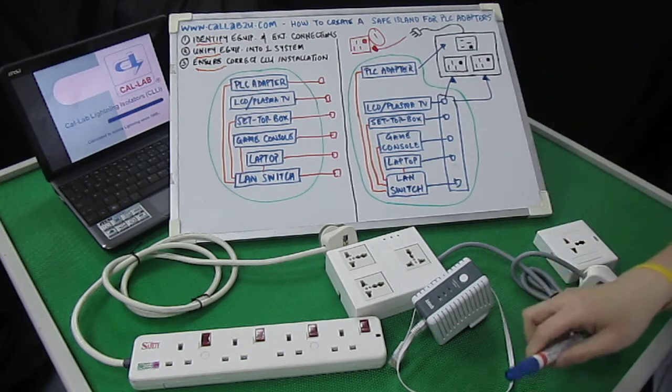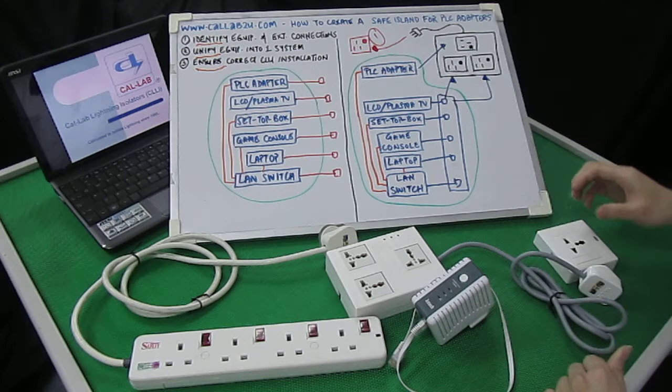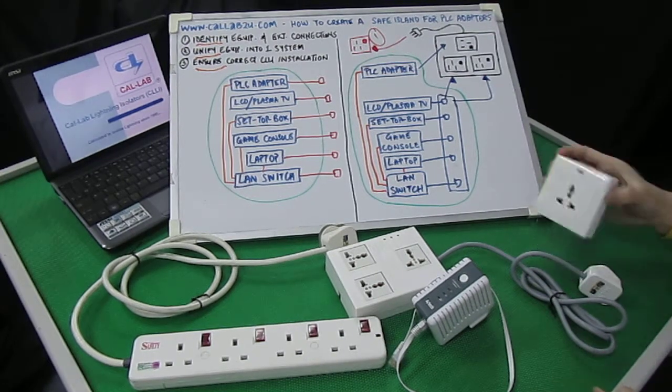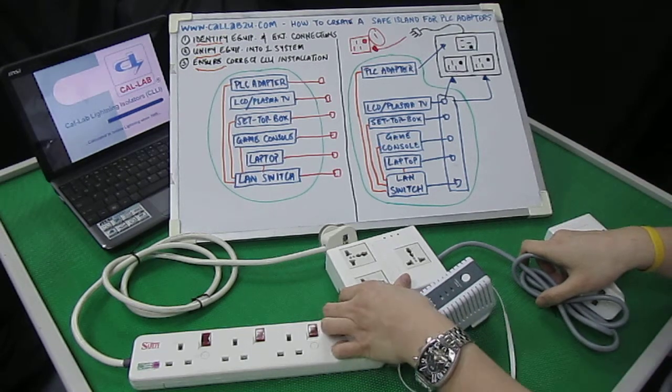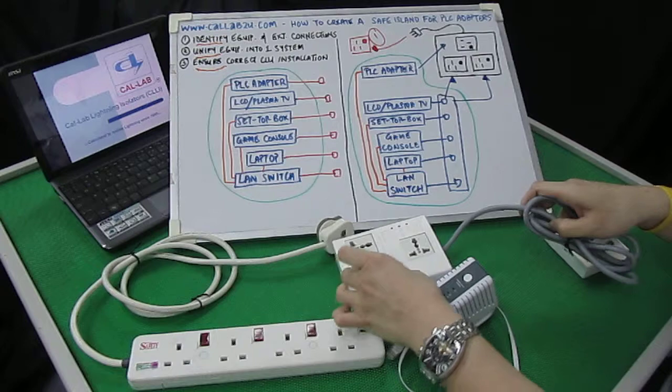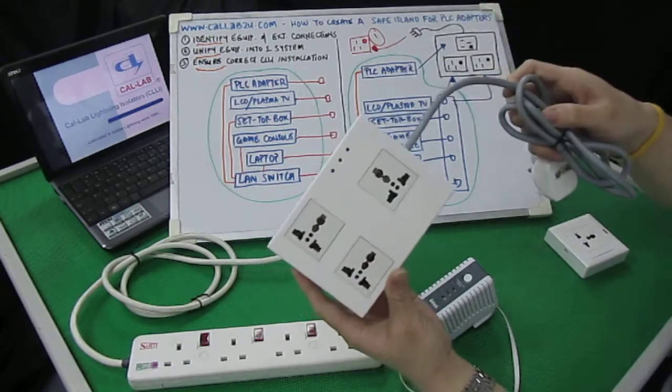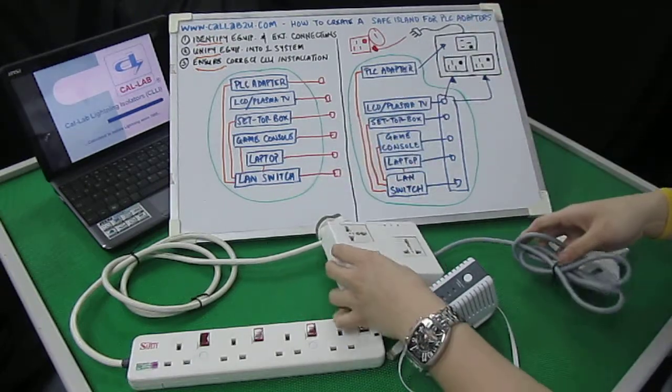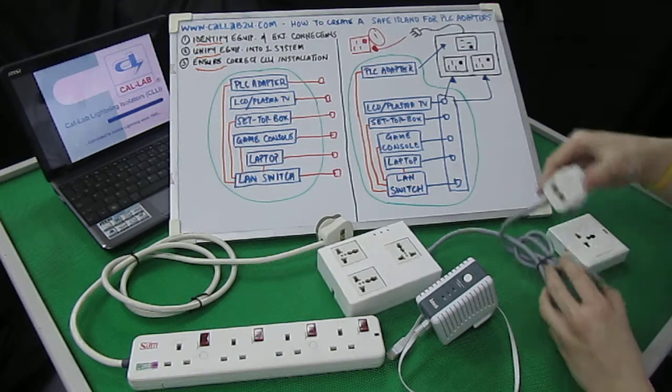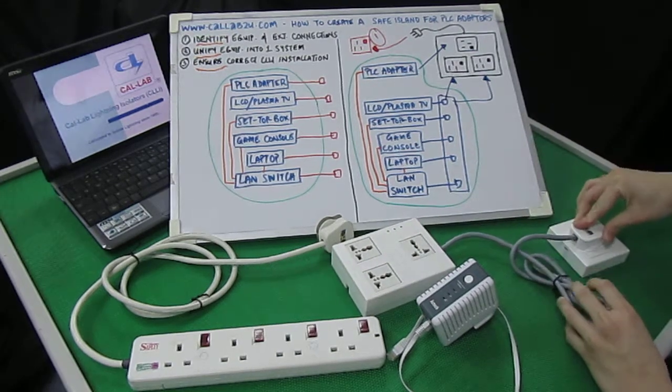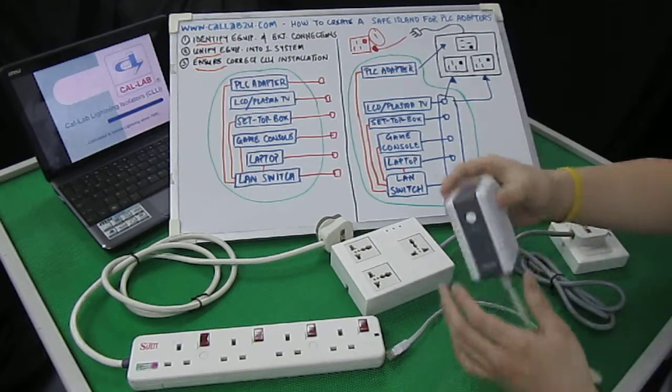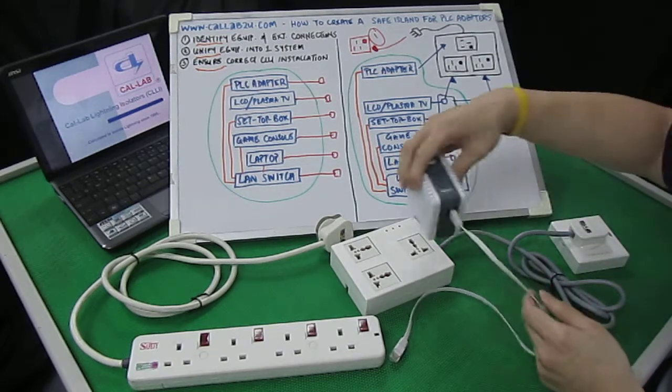Now let's take a look in the physical form. We have a 3-pin wall outlet here and this is the Shure Streamer model that we've described on the board. As you can see, this is the model here. So again, correct installation would be to plug the 3-pin plug of the Shure Streamer into the wall outlet first. It's mentioned first point of contact. And then the PLC adapter goes to the topmost outlet, which is here.